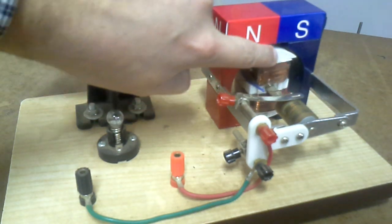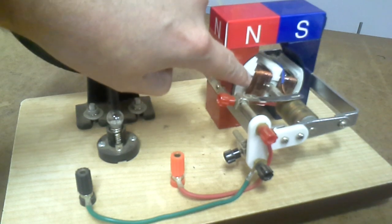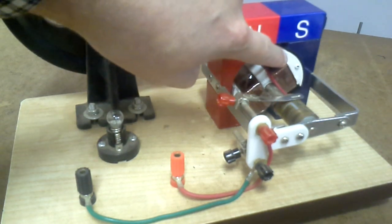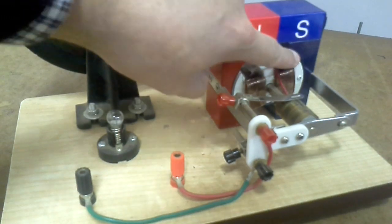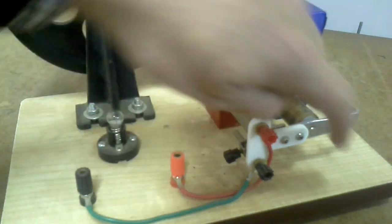So as the coil rotates around, the coils here cut through the magnetic field and generate electricity. And to stop the wire from coiling up, I've got this slip ring here, and you can't see it but there's another slip ring here.